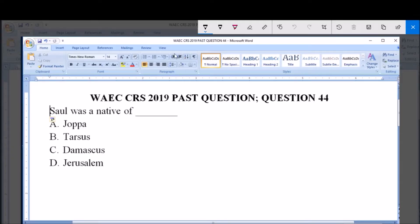Hello, good afternoon. Welcome. This is WAEC CRS past question, year 2019, question number 44. Paul was a native of [blank]. This means the native, that is the homeland of Saul, where Saul came from.